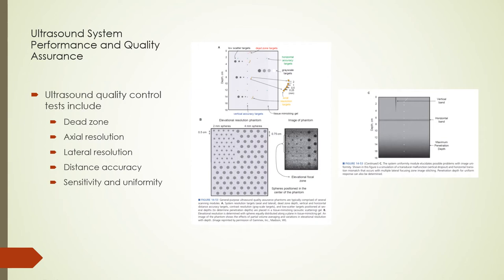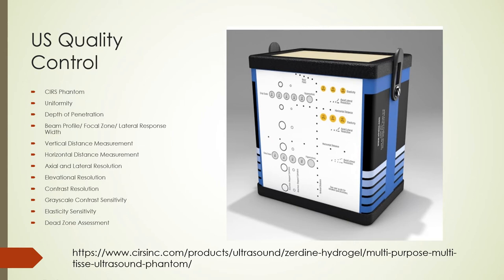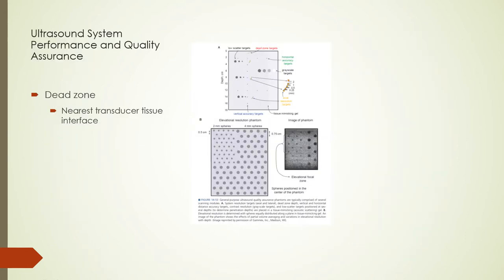The CIRS multi-purpose multi-tissue ultrasound phantom is a common phantom used for most ultrasound quality control. It has attenuation properties between 0.5 to 0.7 dB/cm/MHz and contains objects for the listed QC tests, supporting transducer frequencies from 2 MHz to 18 MHz. A generic ultrasound phantom with three modules may also be used; the first and second modules are shown on this slide.